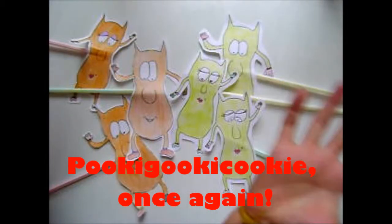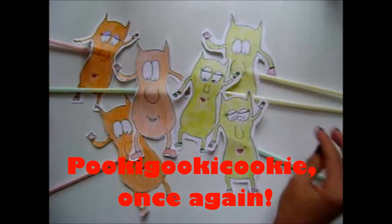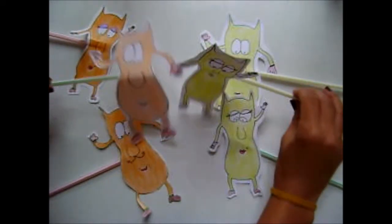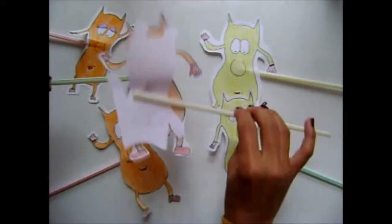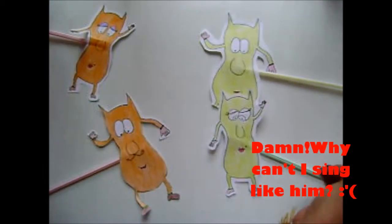The yellow cahoos started to flirt with the orange cahoos, singing melodies, because they wanted to have sex and reproduce. However, they didn't understand each other's songs, so they were not capable of mating.